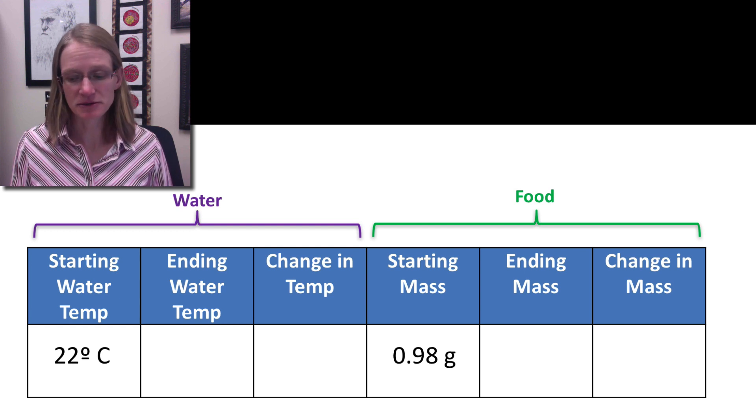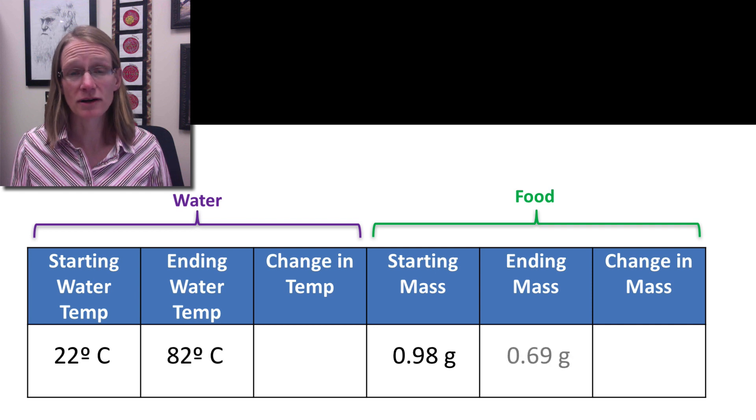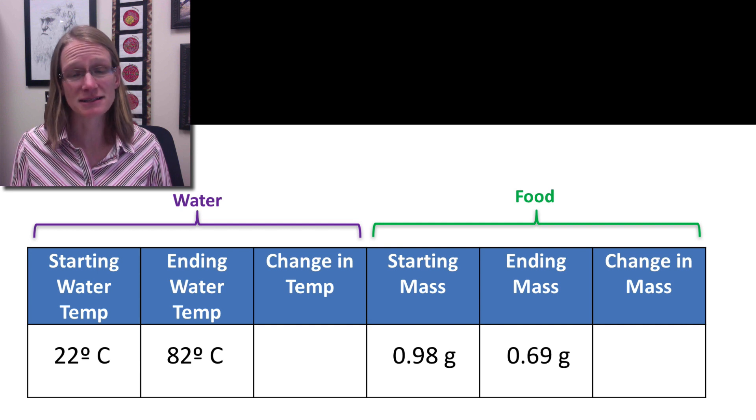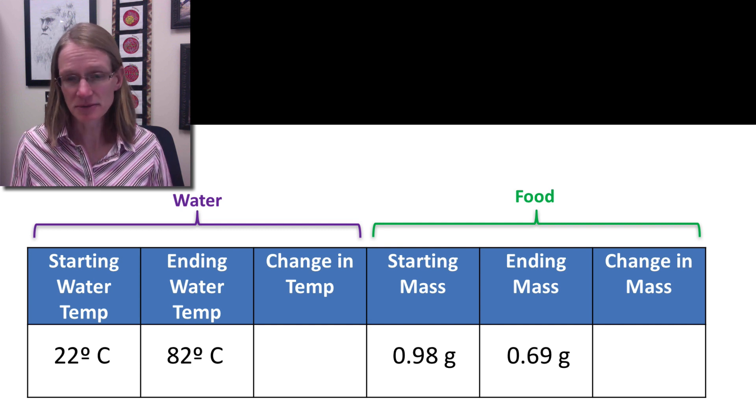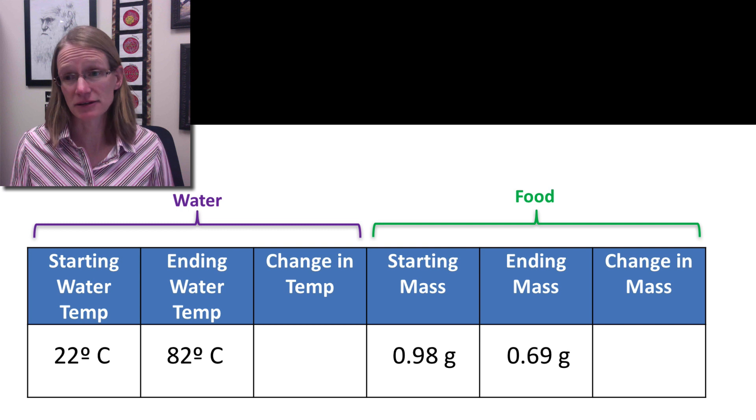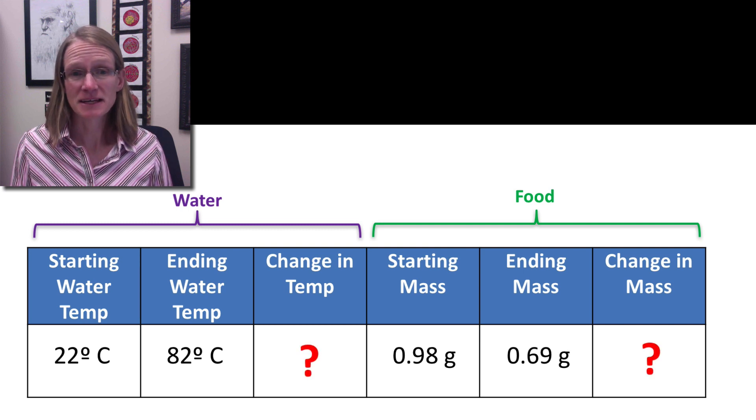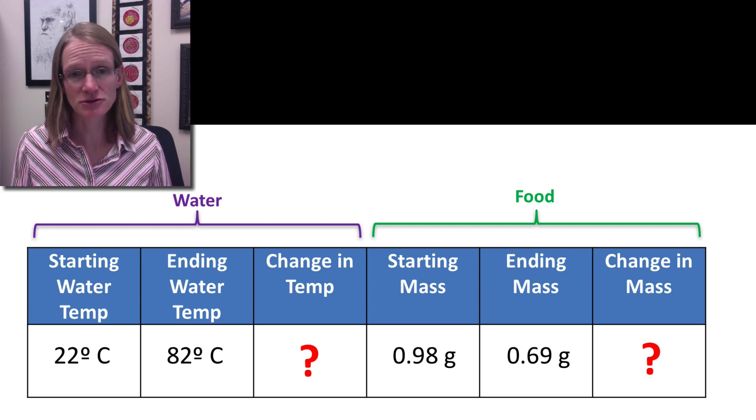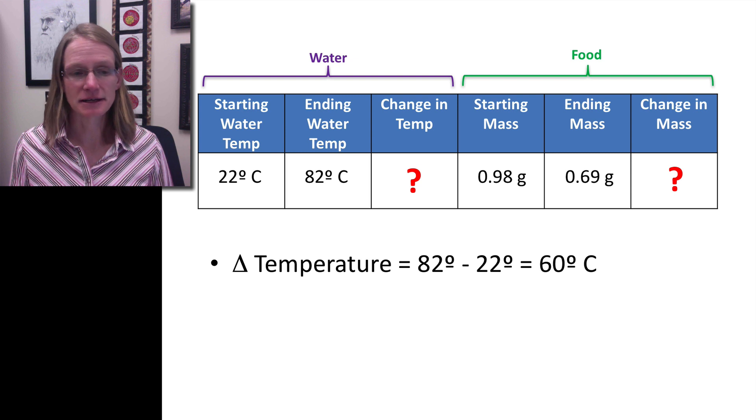Of course, at the end of the experiment, we know that we measured again and found that the water had risen to about 82 degrees C and the food had actually reduced to about 0.69 grams. And so the only pieces we now have is that we don't actually have yet is this calculation of the change in temperature and the change in mass of both our water and our food. So of course, we can do a little bit of algebra and easily figure those things out.